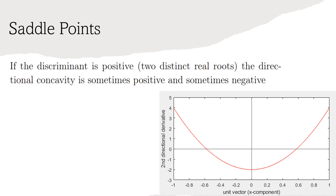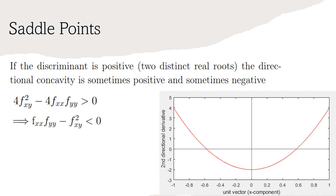If the discriminant is positive, then the quadratic has two real roots. This means that the directional concavity is sometimes positive or sometimes negative, depending on the direction of u. If the discriminant of our quadratic expression is positive, it can be rewritten to resemble what we saw in the second derivative test. So, if the evaluated discriminant is positive, then the critical point is a saddle point, as the directional concavity is sometimes positive and sometimes negative.